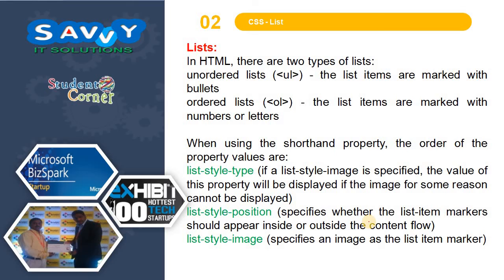List-style-image sets an image as the list item marker. We are not mentioning definition list in detail because its definition term and definition description have no additional CSS properties of note, so we are ignoring those examples.